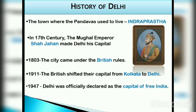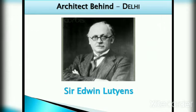In 1911–1937, the British shifted their capital from Kolkata to Delhi. After independence in 1947, New Delhi was officially declared as the capital of free India. The city of Delhi was planned by Sir Edwin Lutyens.